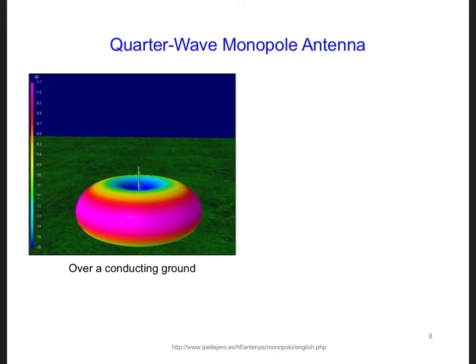Here is the radiation pattern of a monopole antenna over a ground plane. We can see that the symmetrical monopole antenna has a symmetrical radiation pattern in the azimuthal direction.